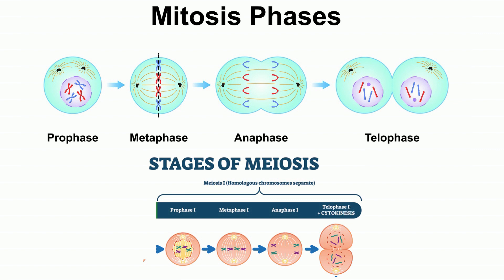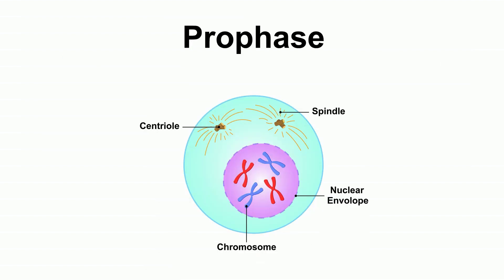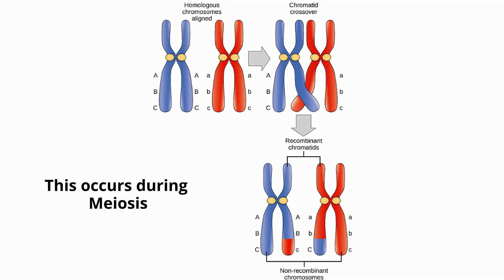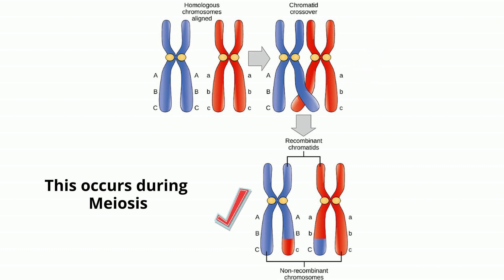One difference is that during prophase for meiosis, the chromosomes match up with other homologous pairs. These are chromosomes of roughly the same size, and the genes are the same type and at the same location. This allows the chromosomes to go through a process called crossing over, during which the genetic information is exchanged between the maternal and paternal chromosomes, shuffling up the genetic information slightly.